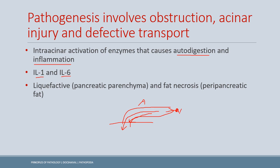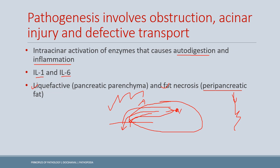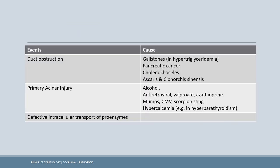A classic high-yield feature of pancreatitis is that it is associated with both liquefactive necrosis and fat necrosis. The pancreatic parenchyma undergoes liquefactive necrosis, while the surrounding peripancreatic fat undergoes fat necrosis. Peripancreatic fat necrosis is associated with poor prognosis, indicating extensive pancreatitis.